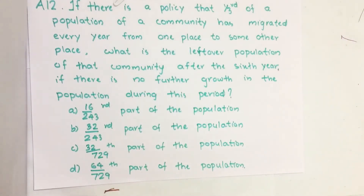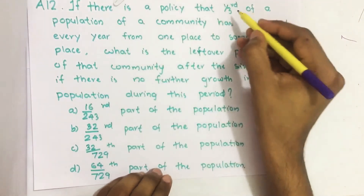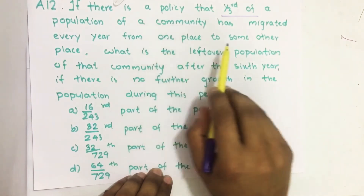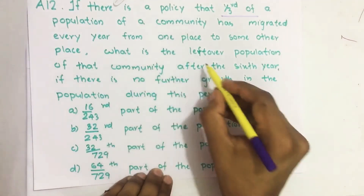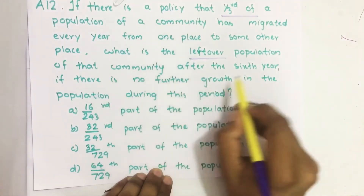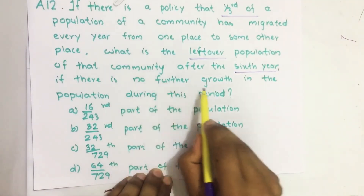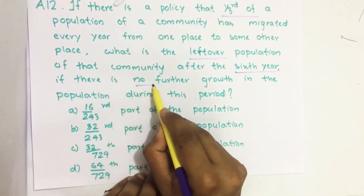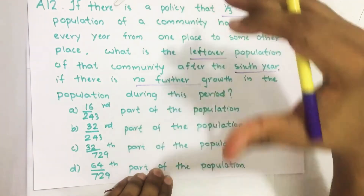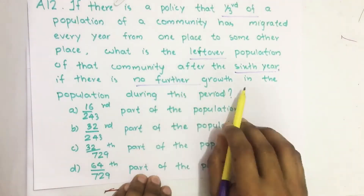So here, one third of the population of a community has migrated every year from one place to some other place. What is the leftover population of the community after the sixth year? There is no further growth during this period — that is what this sentence means.